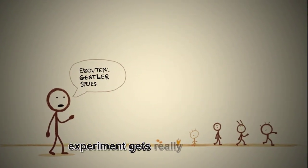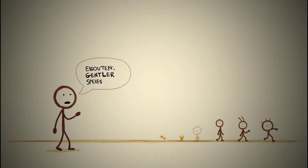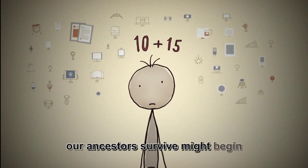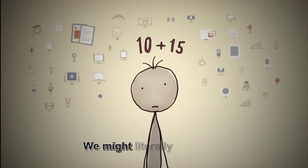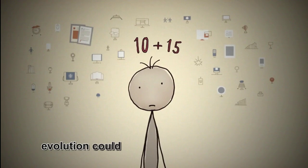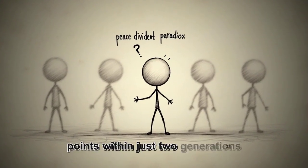But here's where our thought experiment gets really interesting. The consequences nobody saw coming. Without the constant threat of conflict, human evolution might actually slow down in some unexpected ways. Stress responses that helped our ancestors survive might begin to atrophy over generations. We might literally become a gentler species. On the flip side, intellectual evolution could accelerate dramatically. With unlimited access to global educational resources and no barriers to knowledge sharing, the average human IQ could increase by 10 to 15 points within just two generations.